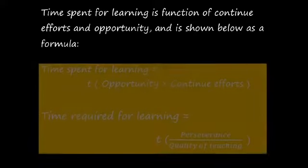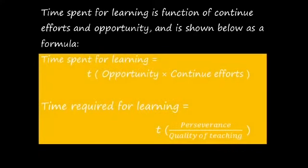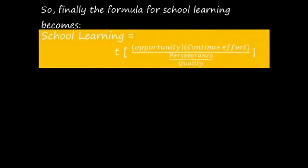Time spent for learning is a function of continuous efforts and opportunity, shown as a formula: time spent for learning equals opportunity multiplied by continuous efforts. Time required for learning equals perseverance divided by quality of teaching. So finally, the formula for school learning becomes: school learning equals (opportunity × continuous efforts) / (perseverance × quality).